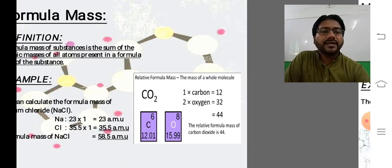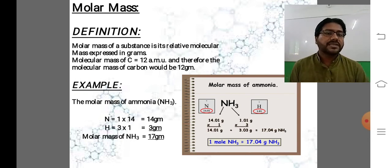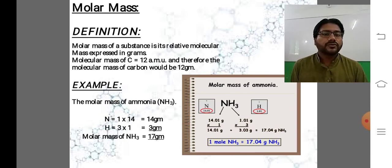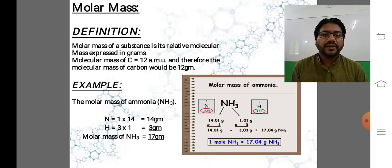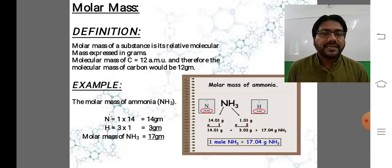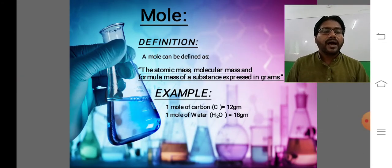Ab aate hain molar mass ki taraf. Molar mass of a substance is its relative molecular mass expressed in grams. Agar hum atomic mass unit hatake gram mein represent karein to wahi cheez molar mass kehlayegi. Jaise ammonia gas NH3 ka molar mass nikalein: N ki tadaad 1 hai, atomic weight 14, so 14×1 = 14. H ki tadaad 3 hai, atomic weight 1, so 1×3 = 3. Inko plus karein to 17 grams aata hai — which is the molar mass of NH3.